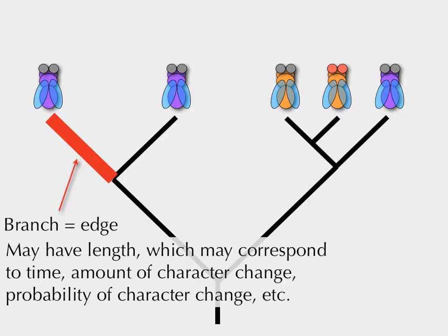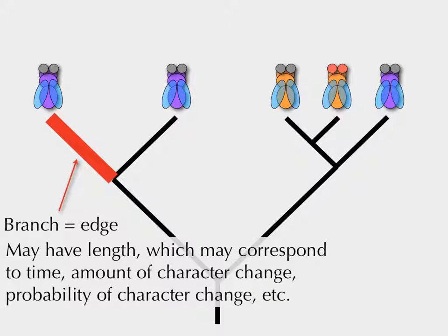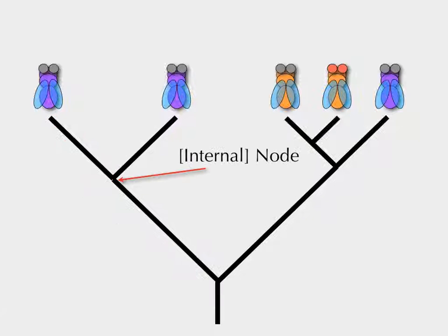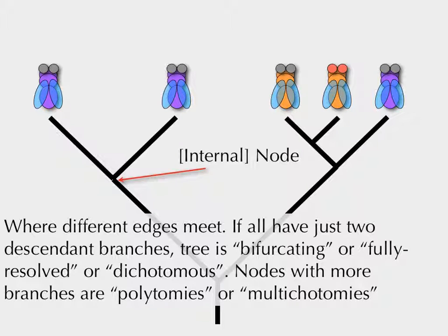A branch is also called an edge — it can have length, and that length can mean time, amount of character change, or probability of character change. The split point is called an internal node, or simply a node — where edges meet. When all internal nodes have exactly two daughter branches, the tree is known as bifurcating, fully resolved, or dichotomous.